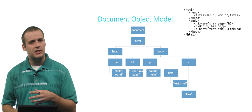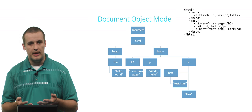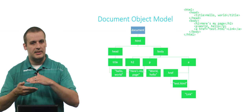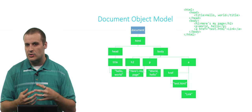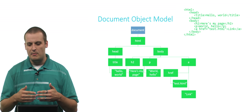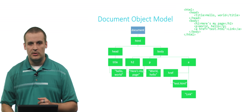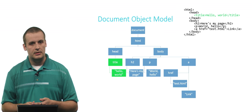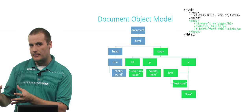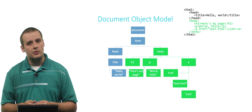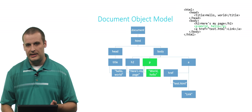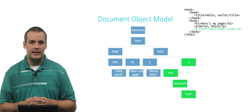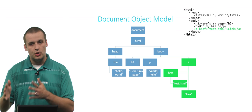Here is what a tree structure of that simple web page might look like. We have a document, and inside of that we have HTML. Within our HTML, at the next level down, there's the head and the body. Inside the head there is a title, and inside the title there is some text — hello world. Inside the body are each of those three individual pieces: the h2, the p, and the a tag. All of that maps to a section of our HTML.